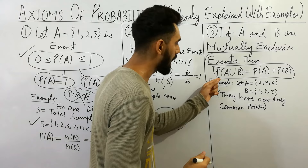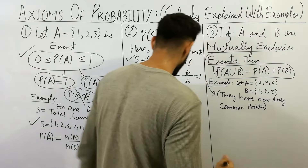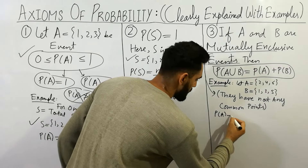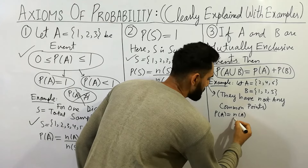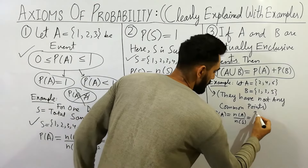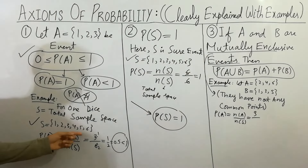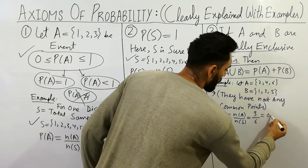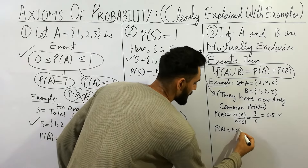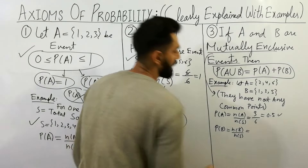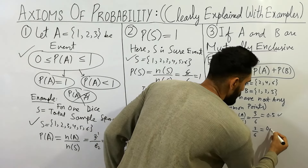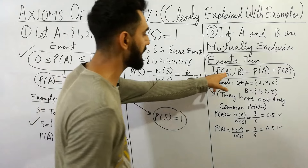Now I'm going to prove that probability of A union B equals probability of A plus probability of B. First, calculating probability of A: number in A divided by number in sample space. Number in A is 3, total sample space is 6, so 3/6 equals 0.5. Next, probability of B: number in B divided by sample space — B also has 3 numbers, so 3/6 also equals 0.5.